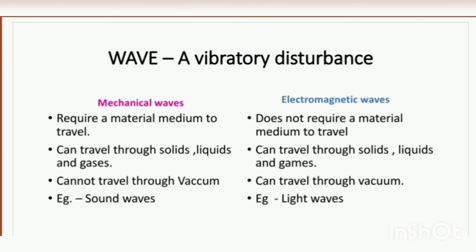We will be studying one type of classification where waves can be classified as mechanical waves and electromagnetic waves. Mechanical waves are the waves which require a material medium to travel or to propagate from one point to another. These mechanical waves can travel through solids, liquids, and gases, as they are all material media. But since vacuum means absence of any material medium or particles, mechanical waves cannot propagate through vacuum.